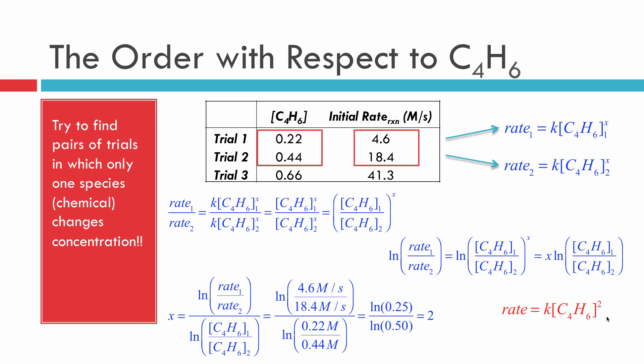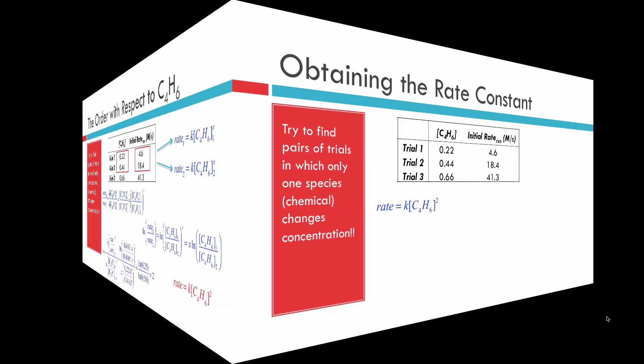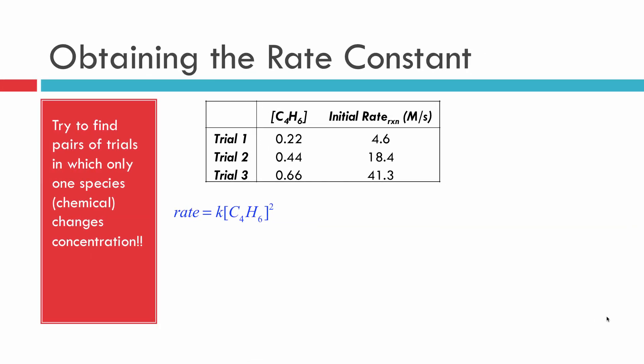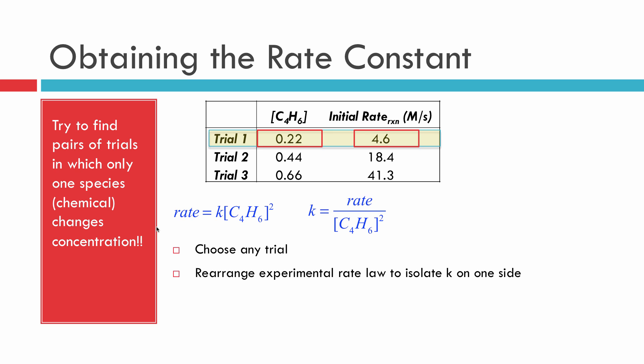We're not done yet, though. We need to find out what K is—the rate constant. So we have our rate law, and to finish this up, it's very simple. We're going to choose any trial, and I'm going to choose trial one, but I could have chosen two or three. All I do is rearrange now to isolate K on one side, which means solve for K. So I've done that.